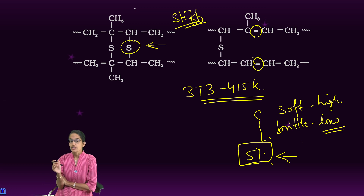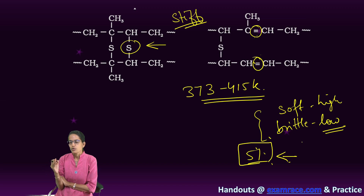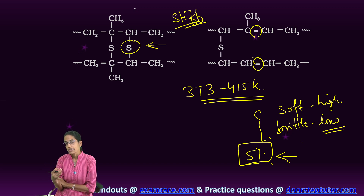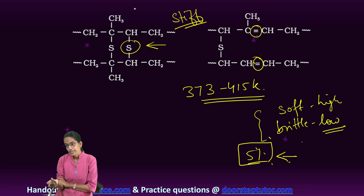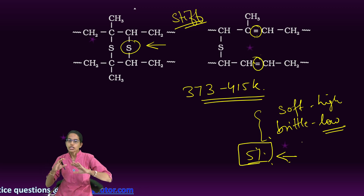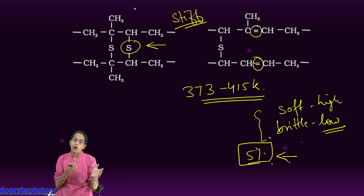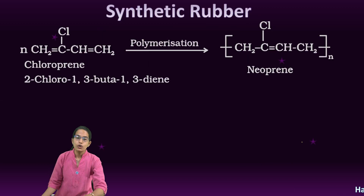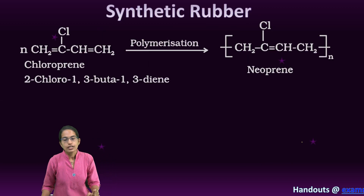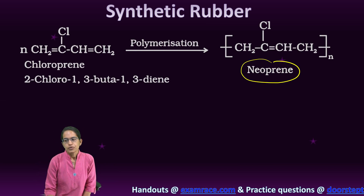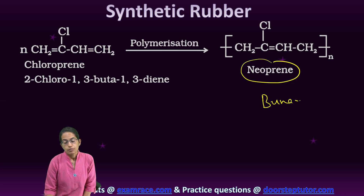The vulcanized rubber has its own properties and improves on the existing properties. With vulcanization, the usage in daily life can be enhanced. This covers the polymer of isoprene — isoprene is natural rubber. Now we talk about synthetic rubber. There are two important synthetic rubbers: one is neoprene, and the other is Buna-N.